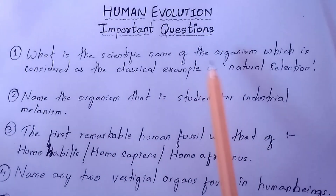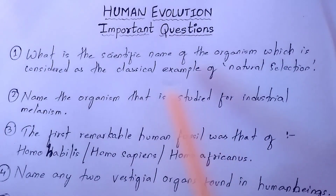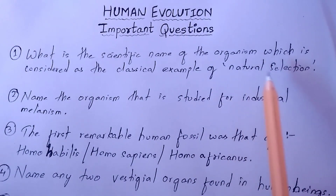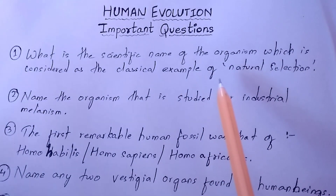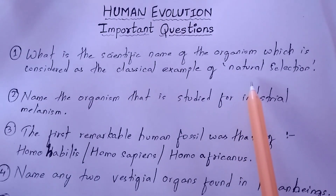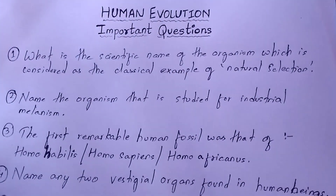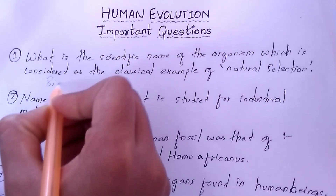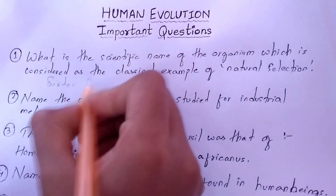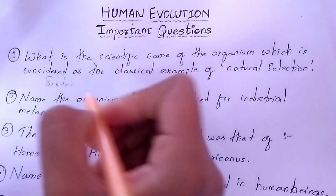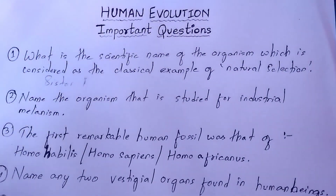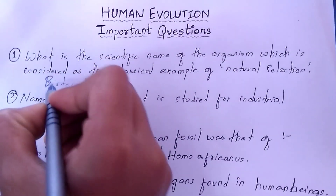The first question: what is the scientific name of the organism used to study natural selection? The answer is Biston betularia. Be careful with your spellings — it is Biston betularia.